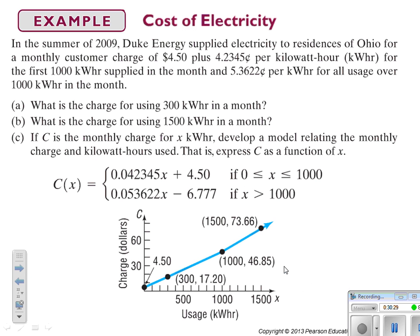If we graph this piecewise function, we have a continuous line from 0 to 1,000. Once we hit the 1,000 mark, the slope increases since the rate increases, and the graph continues upward to infinity. Make sure you include this graph in your notes.